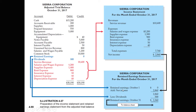We pull the beginning retained earnings from the adjusted trial balance, add what we've calculated our net income to be, and look for any dividends and reduce by those dividends to tell us what our retained earnings on October 31st will be. That amount will impact our balance sheet.